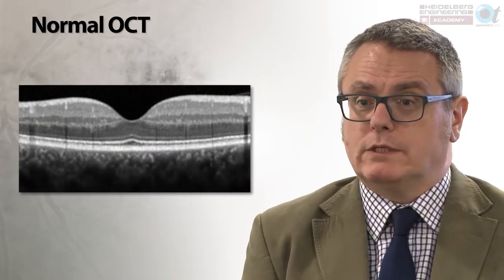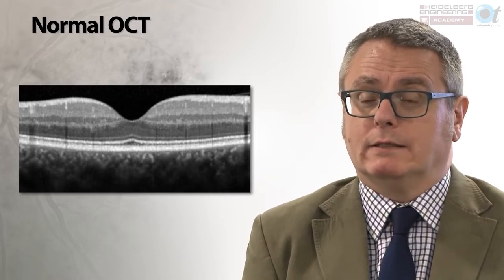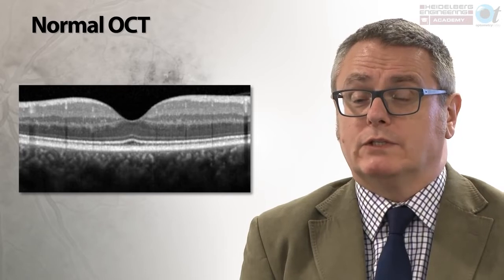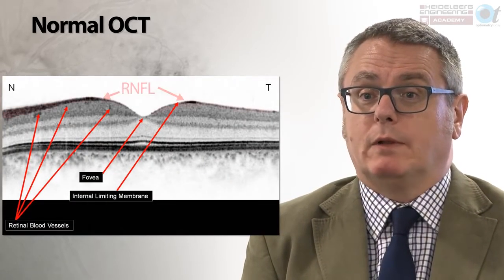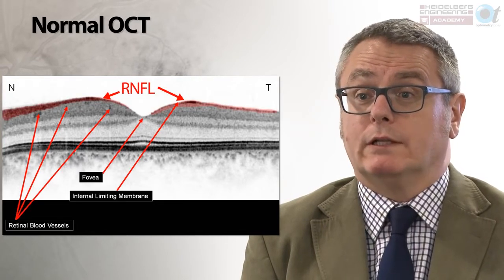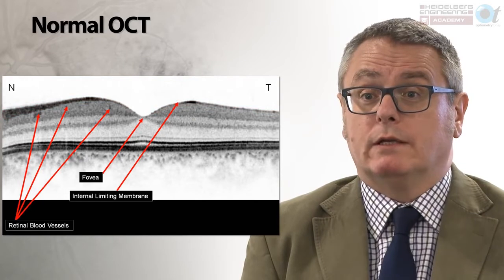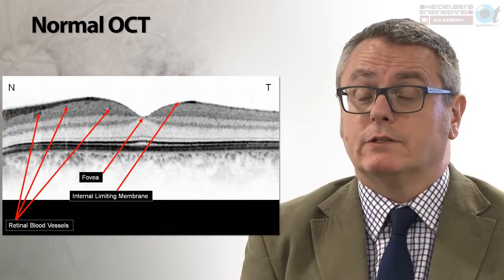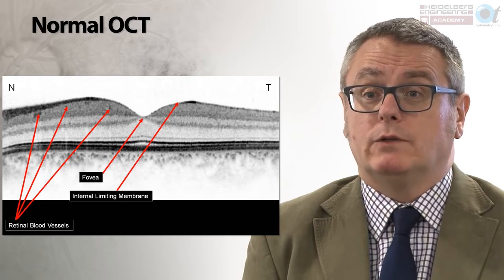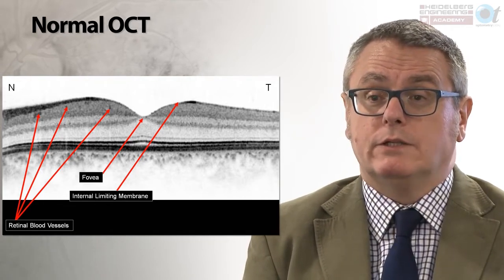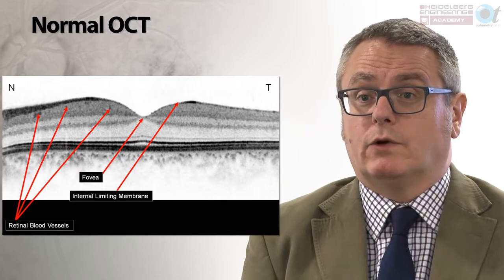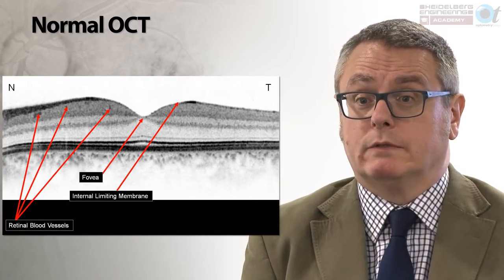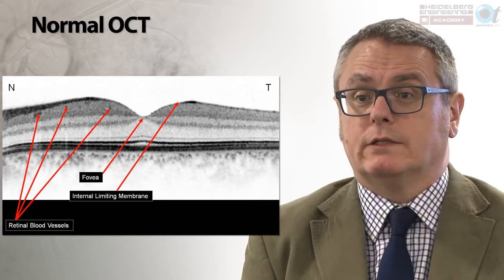We're now going to look at normal OCT structure and what we're actually visualizing — thinking about anatomy and its significance when doing OCT scans. On the nasal aspect of the scan, the retinal nerve fibre layer is thickest; on the temporal aspect it is thinner. We can see highly reflective structures within the ganglion cell layer — retinal blood vessels — which cast shadows throughout the OCT cross-section. The internal limiting membrane can be seen as an intermittently hyper-reflective surface structure corresponding to the pedicle aspect of the Müller cells, and the foveal depression is visualized in the center of the scan.